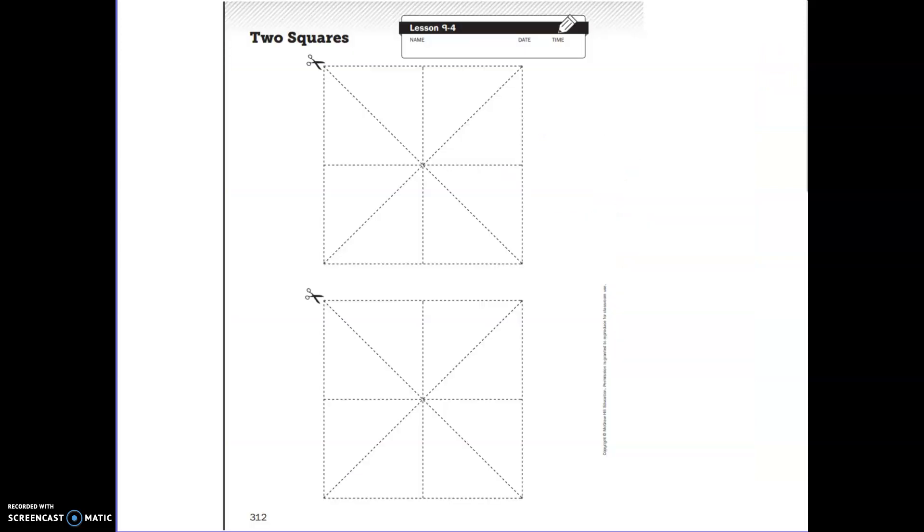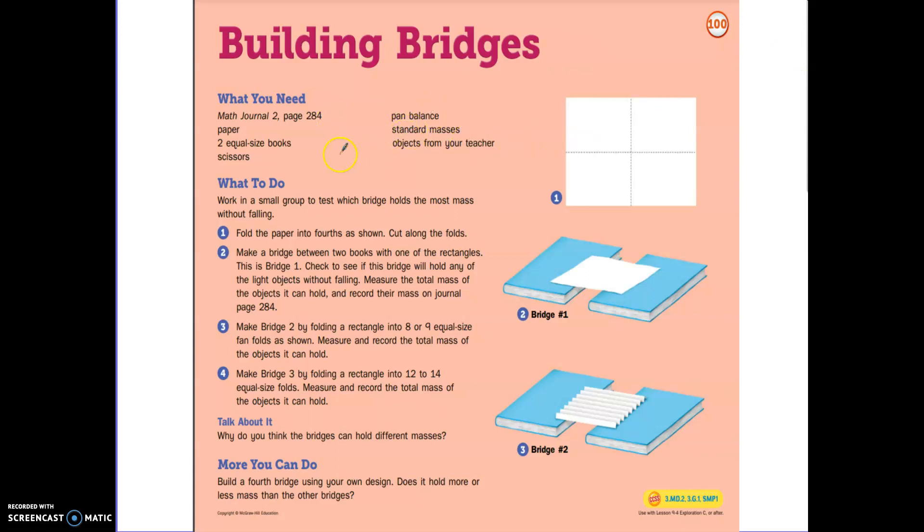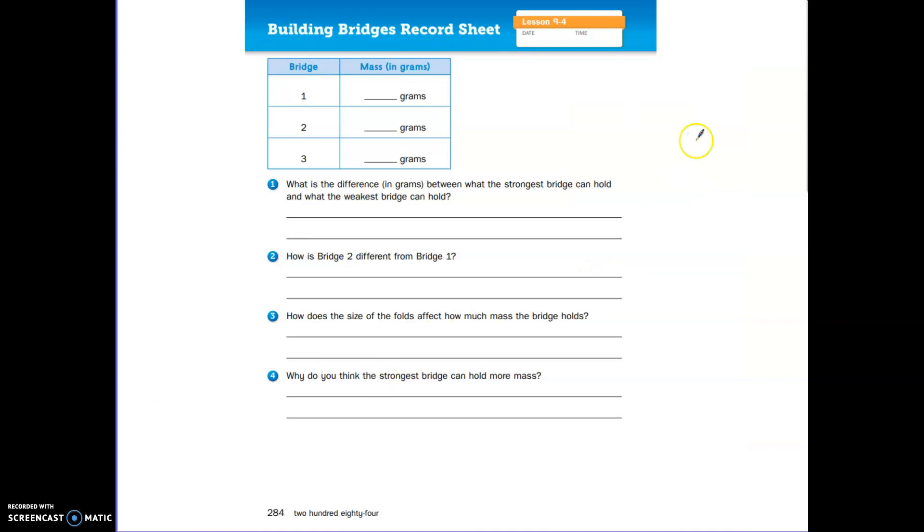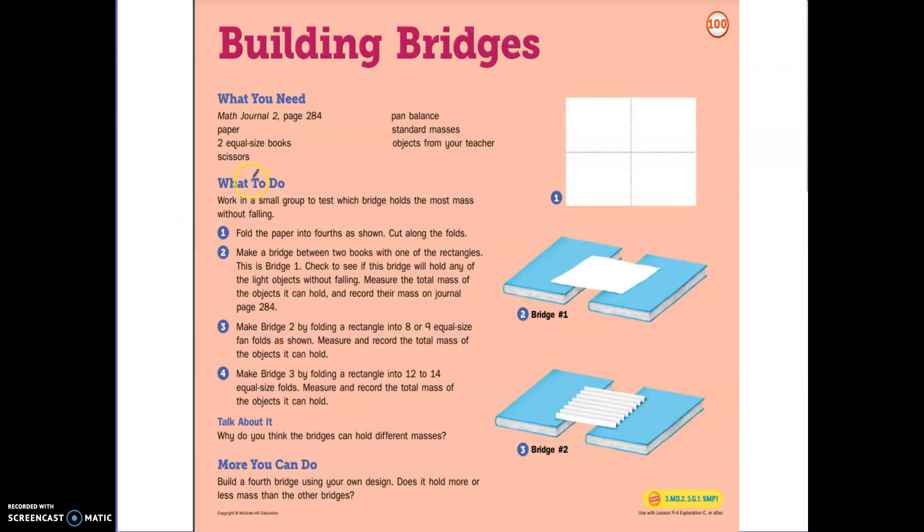Another activity that you're going to work on is called Building Bridges. You will need math journal page 282. You're going to need some paper, two books that are about the same size, scissors, a pan balance - I'm thinking you might find one in the milk crate - some pieces of mass, and objects from home. You're going to work in a small group to test which bridge holds the most mass without falling.